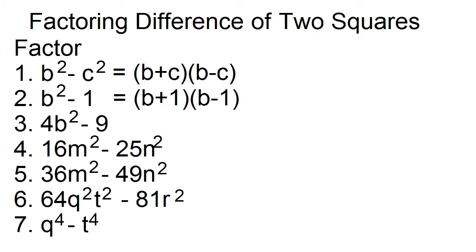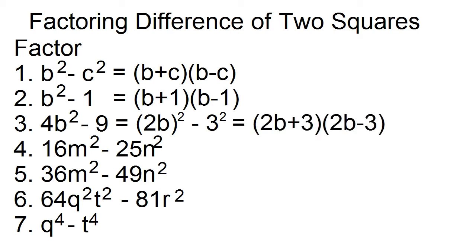Number three: factor four b squared minus nine. Four is a perfect square, b squared is a perfect square, and nine is a perfect square. This can be written as the square of the quantity 2b minus the square of three. The factors are 2b plus three and 2b minus three.